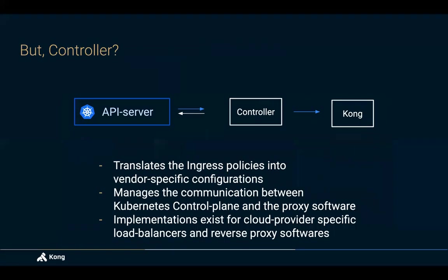The controller is the piece that is Kubernetes-specific. The proxy could be agnostic to Kubernetes — you can have load balancers in non-Kubernetes environments and proxies running anywhere in the cloud. The controller is what configures it and makes it specific to Kubernetes. This opens up the realm of possibilities where the controller interacts with different CRDs — for example, cert-manager for certificate management, Prometheus metrics, and so on. All the intelligence is essentially baked into the controller, while the proxy software handles the proxy capabilities.